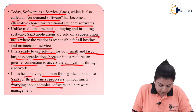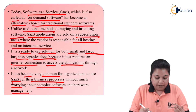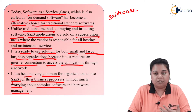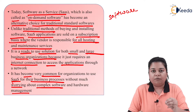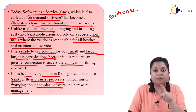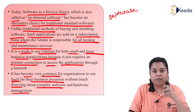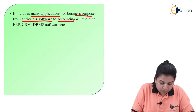It has become very common for organisations to use Software as a Service for their business processes without worrying about complex software and hardware management. Software as a Service is software or applications used on a rent or subscription basis. For example, if I am accessing an application in the SaaS model — take Netflix — I am paying only for the subscription and I am not responsible for anything else. It is the vendor's responsibility to ensure the service is available whenever I need it. SaaS includes many applications for business purposes, from antivirus software to accounting and invoicing, like ERP, CRM, and DBMS software.